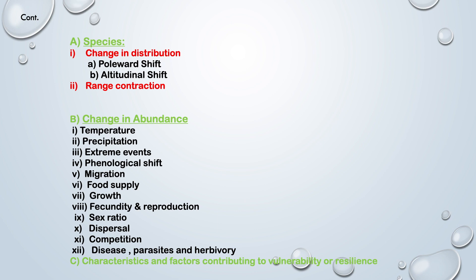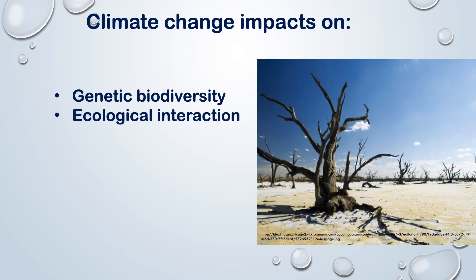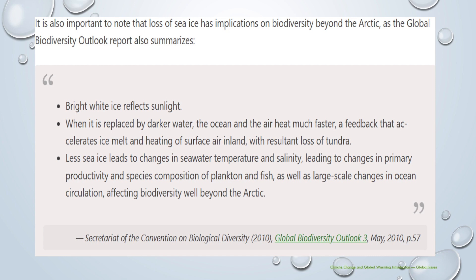Disease, parasites, and herbivores: Climate change is related to the impact on species by changing disease distribution and severity as species are stressed by increased temperature. Characteristics and factors contributing to vulnerability or resilience: Northern pole-adapted species are at risk due to increased competition from species invading from warmer climates. Limited dispersal ability is also a key risk factor. Climate change also has impact on genetic biodiversity and ecological interactions. Loss of sea ice has implications on biodiversity beyond the Arctic, as the Global Biodiversity Outlook report also summarizes.